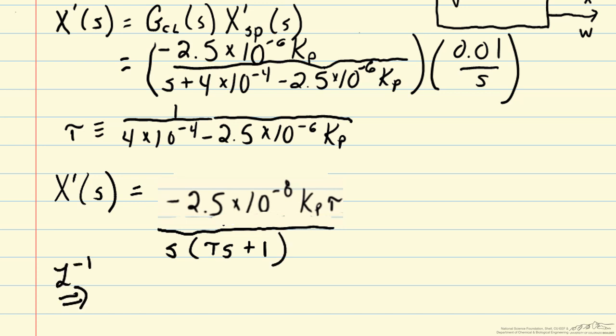So we can take the inverse Laplace transform to calculate X in the time domain. Now we just have 2.5 times 10 to the minus 8 Kp times tau times 1 minus E to the minus T over tau.